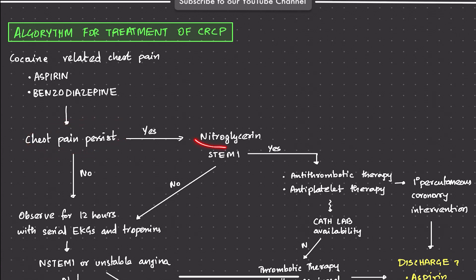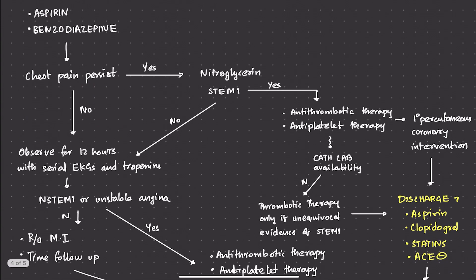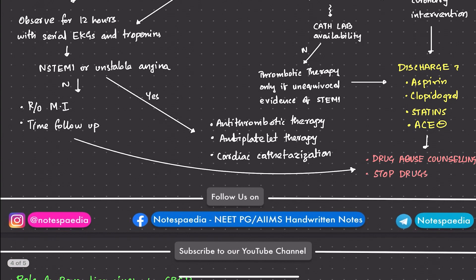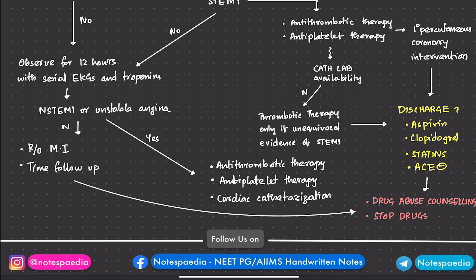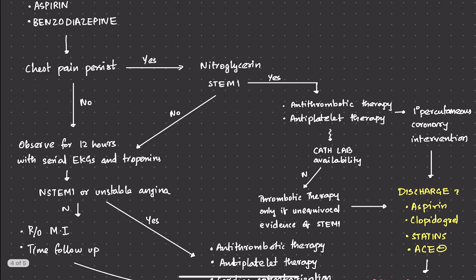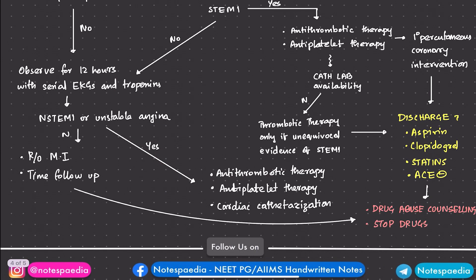If chest pain persists after aspirin and benzodiazepines, nitroglycerin is added. If pain then resolves, observe the patient for up to 12 hours with serial ECGs and cardiac biomarkers. If all comes back well with no signs of unstable angina, rule out myocardial infarction and arrange timely follow-up with drug abuse counseling. If features of unstable angina or NSTEMI are present, proceed to anti-thrombotic and antiplatelet therapy, and consider cardiac catheterization. If pain persists, check the ECG for STEMI. If no STEMI, continue with observation protocol.